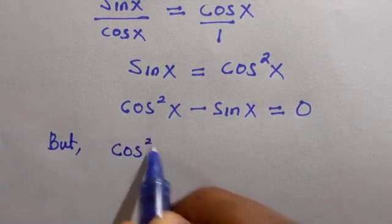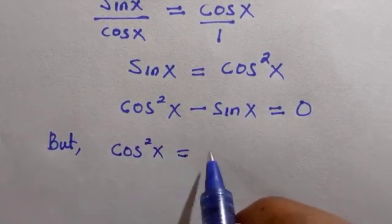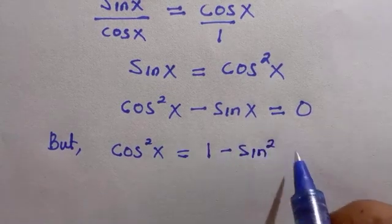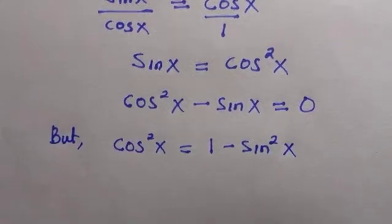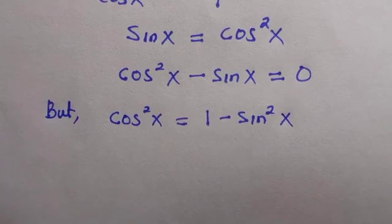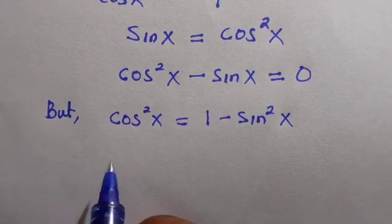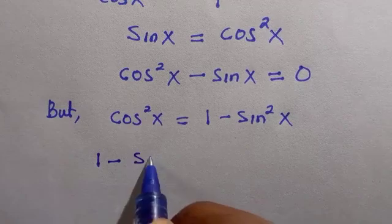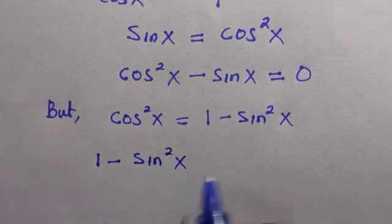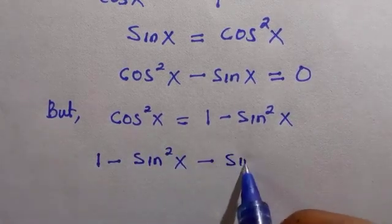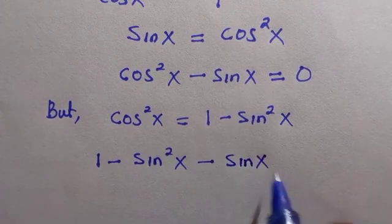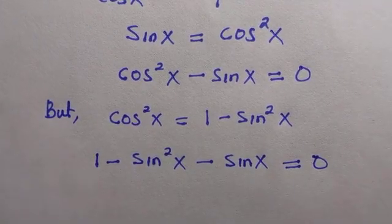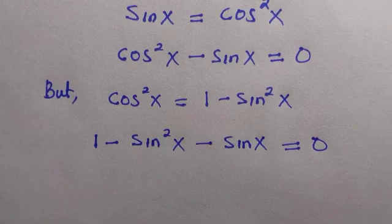We should also know that cos squared X is an identity of 1 minus sin squared X. By replacing it, we have 1 minus sin squared X minus sin X equals 0.